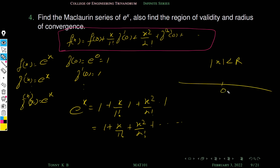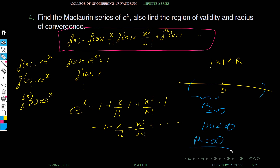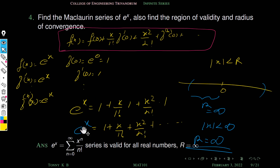We know that the region of validity is of the form mod x less than r, because the center is the origin. We need to find the maximum r such that our function is differentiable. We know that this function is differentiable for all real numbers, so r equals infinity. This means the series is valid for mod x less than infinity, i.e., all real numbers. So the radius of convergence is infinity, and we can write e^x as sigma n equals 0 to infinity of x^n over n factorial.